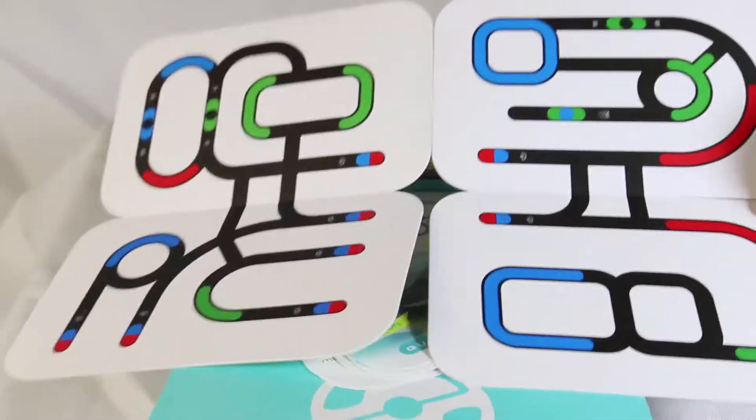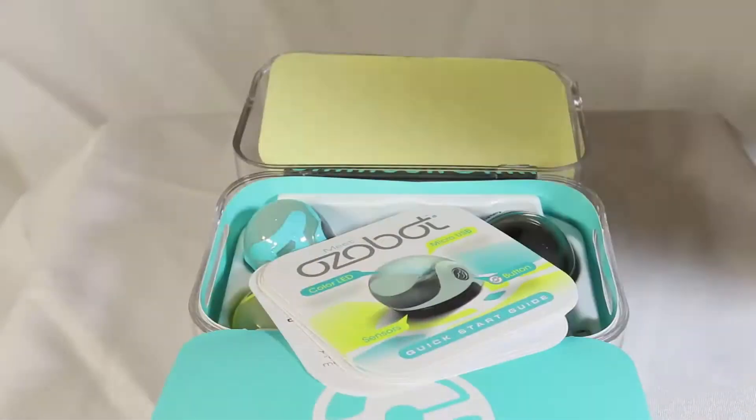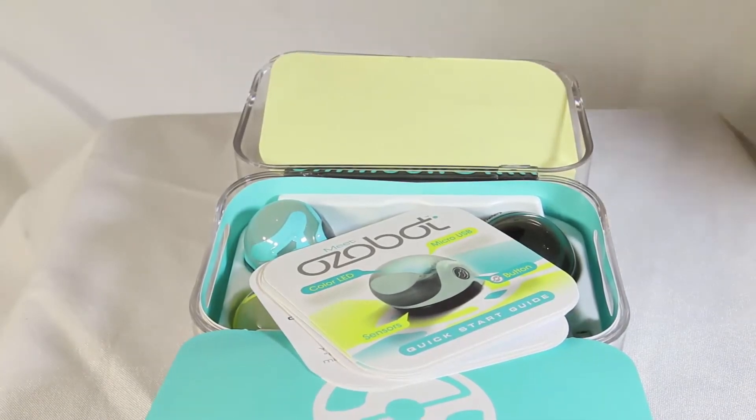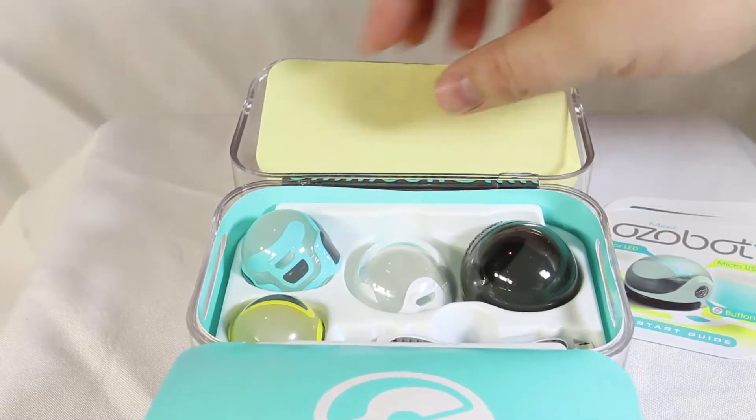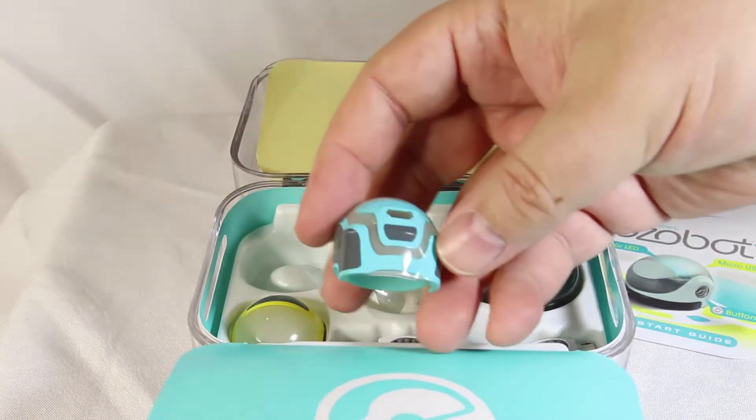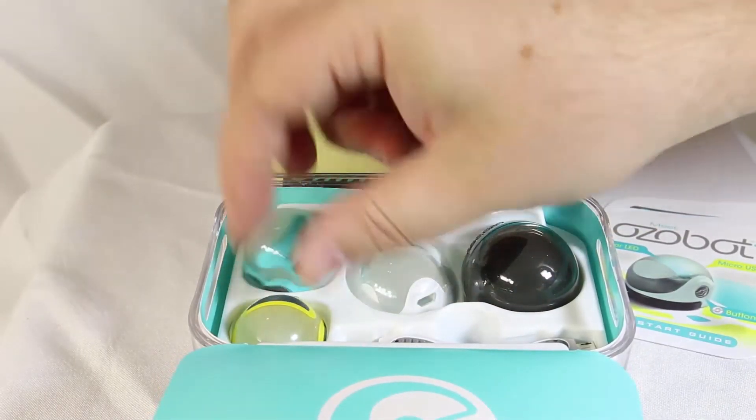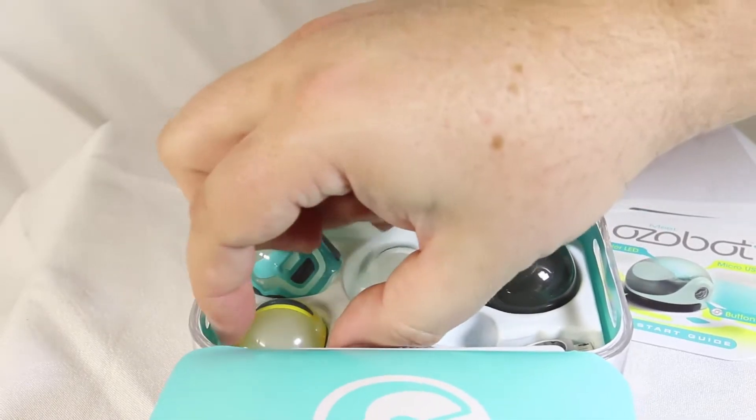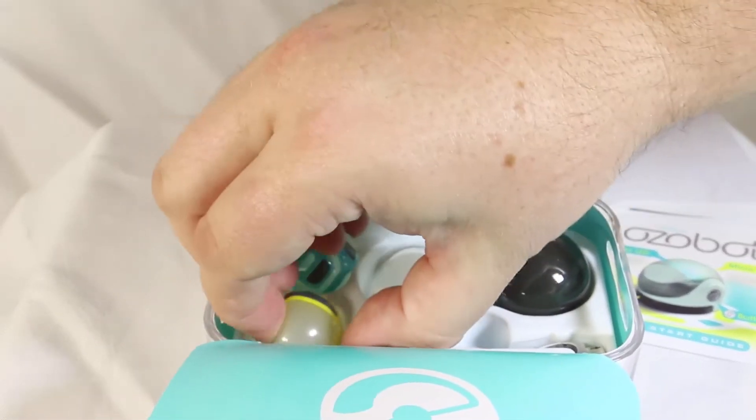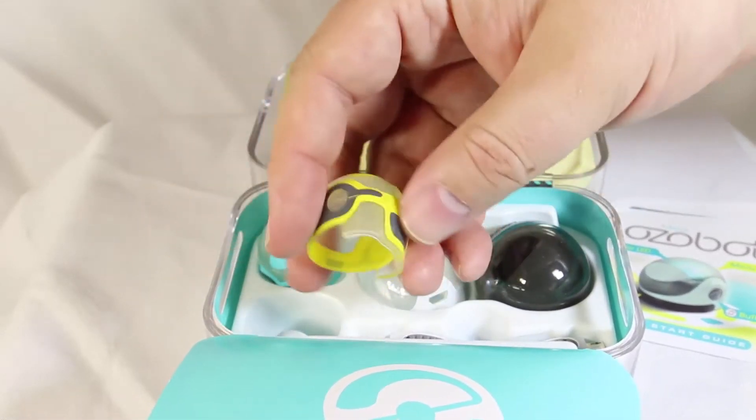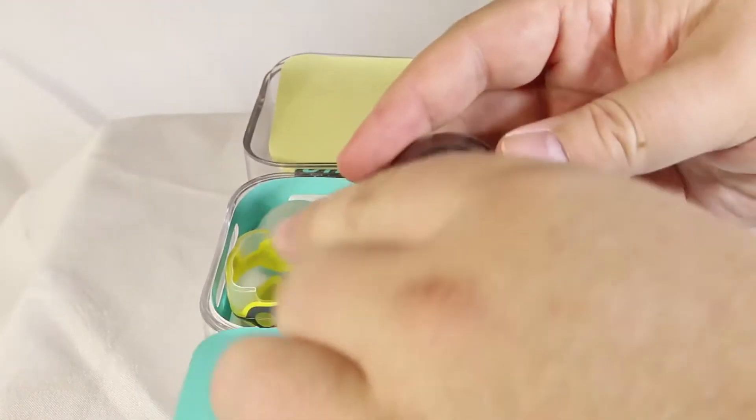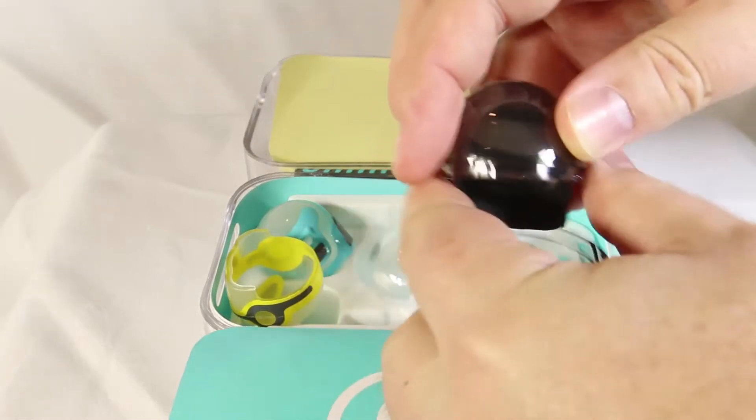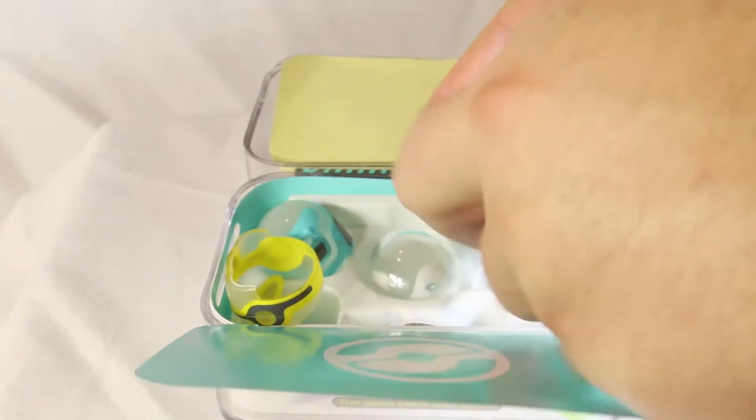On their website, Ozobot teaches robotics and coding through fun, creative, and social games. They have apps that work on your mobile devices—especially the iPad, which I found most fun. You can use different colors to program or teach the Ozobots what to do. They come in several different colors and covers that you can put over the Ozobot.